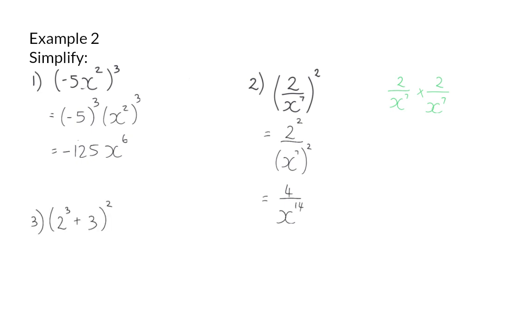This law, however, cannot be applied when there is more than one term in the bracket. For example, here, we have 2 to the power of 3, which is 8, plus 3, that should be squared. But, we first need to add up inside to get 11 squared, and that is 121.